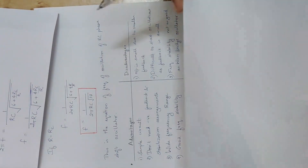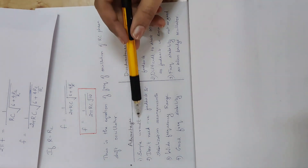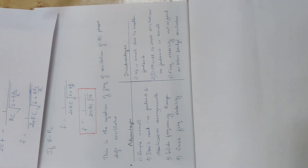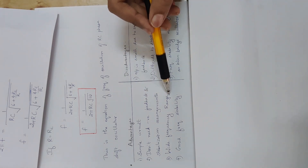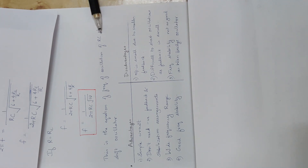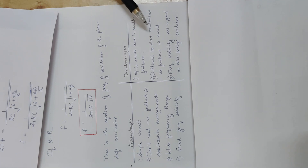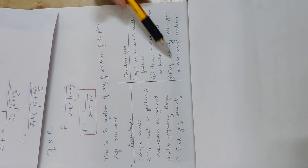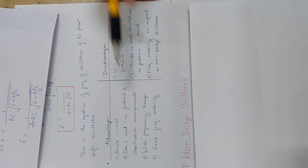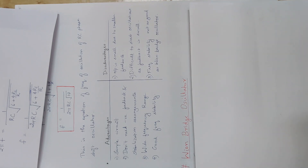RC phase shift oscillator advantages and disadvantages. Advantages: it is a simple circuit; there is no negative feedback and stabilization arrangements needed; a wide frequency range is available; frequency stability is good. Disadvantages: the output of the RC phase shift oscillator is small because of the feedback; it is usually difficult to start oscillations; frequency stability is not as good as the Wien bridge oscillator. So we compare it with the Wien bridge oscillator when we learn that.